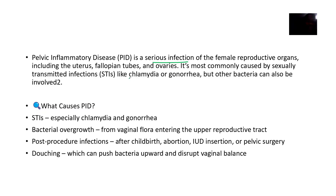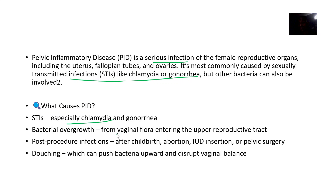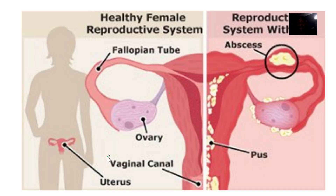If a woman has this, most of the time she has had sex with somebody who spread chlamydia or gonorrhea to her. So what usually causes this: sexually transmitted infections from chlamydia or gonorrhea, bacterial overgrowth — sometimes the normal bacteria in the vagina can grow too much, especially if the immune system is not strong enough to control them. Also, bacteria overgrowth from vaginal flora entering the upper reproductive tract, post-procedure infections like after birth, abortion, intrauterine device insertion, or pelvic surgeries, which can push bacteria upward and disrupt the vaginal balance.